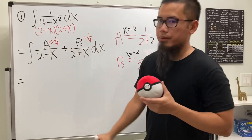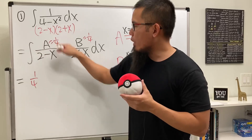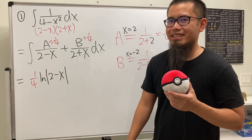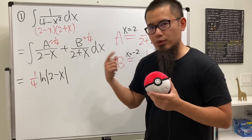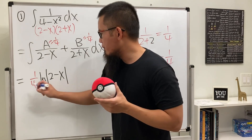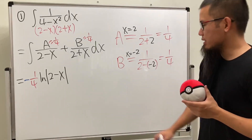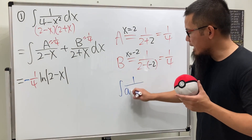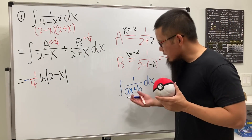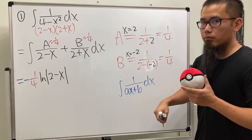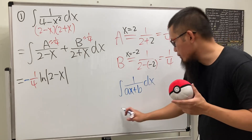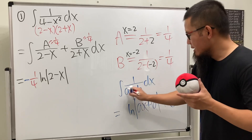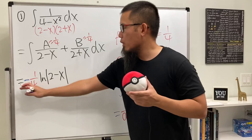To integrate this, we just have the constant multiple 1/4, and to integrate 1 over (2 minus x) we get ln|2 minus x|, but we need to divide by the derivative of the inside which is negative 1. As a reminder, whenever we integrate 1 over a linear function (ax plus b), we do a u-substitution and get (1/a) ln|ax + b| plus C.